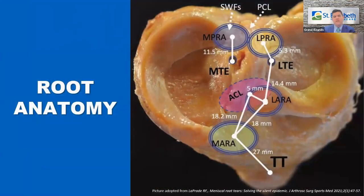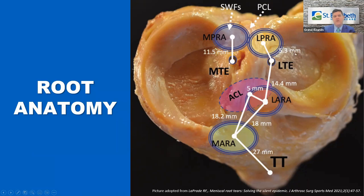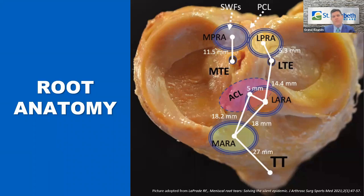The root anatomy is notable. The medial meniscus has a broader C-shaped structure, with the posterior horn medial meniscal root attachment right off the edge of the PCL and an anterior root attachment. The lateral meniscus is smaller, more a true C-shaped structure, with anterior attachment just off the edge of the ACL and posterior attachment right off the PCL. The majority of tears will be posterior medial meniscal root tears, which are much more common than lateral meniscal root tears.